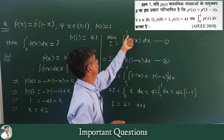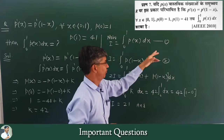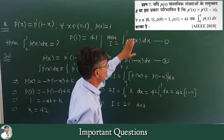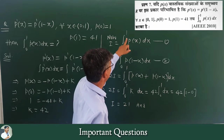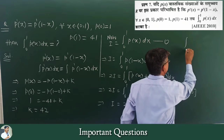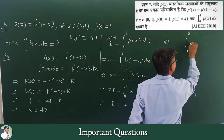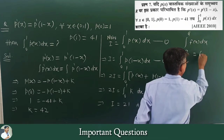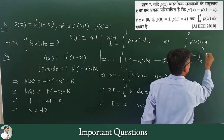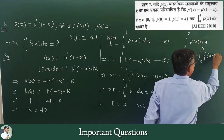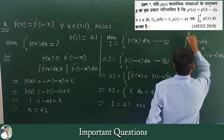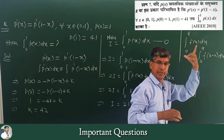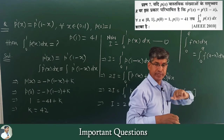Let I equal to the integral from 0 to 1 of p(x)dx — this is equation number 1. Now using the P4 property: the integral from 0 to a of f(x)dx equals the integral from 0 to a of f(a-x)dx, meaning we subtract x from the upper limit.